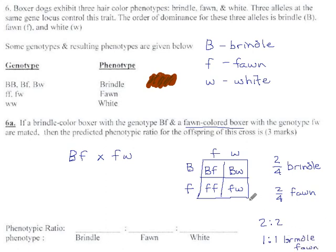Or if you say 1 brindle to 1 fawn, that makes perfect sense also. And if we filled that in here, we'd say 1 brindle to 1 fawn to no white dogs are possible with this cross.